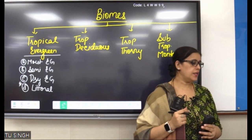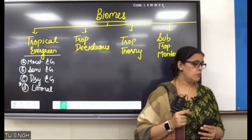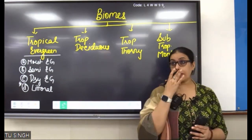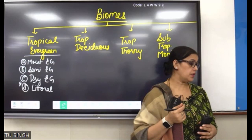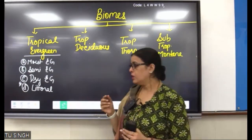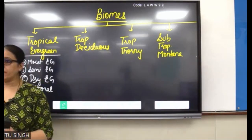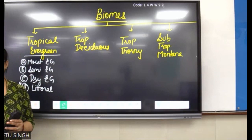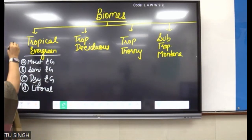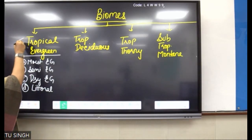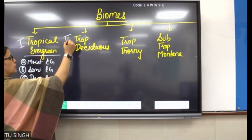Tropical Evergreen has four categories: Moist Evergreen, Semi-Evergreen, Dry Evergreen, and Littoral. Now, which category is number one? I will now go to number two. The second biome that the nodal ministry has given us: I have got Tropical Deciduous.